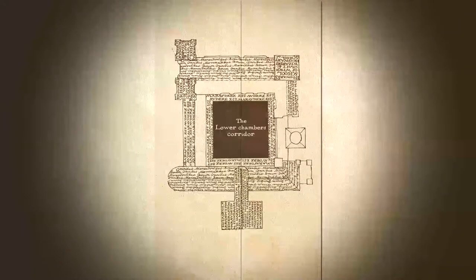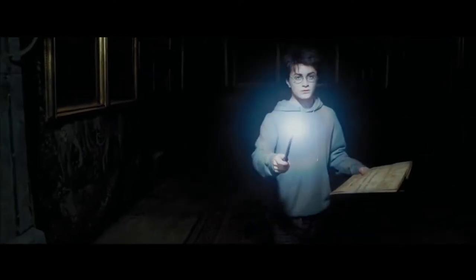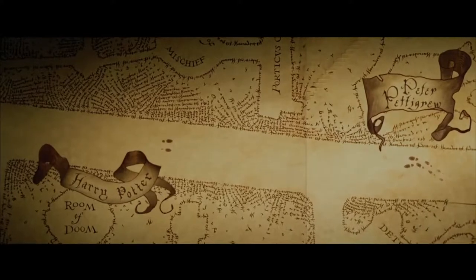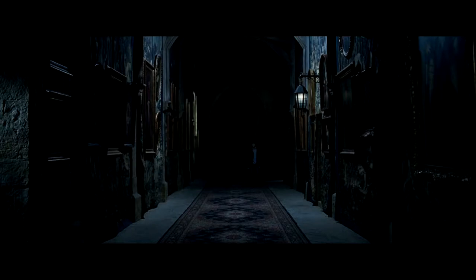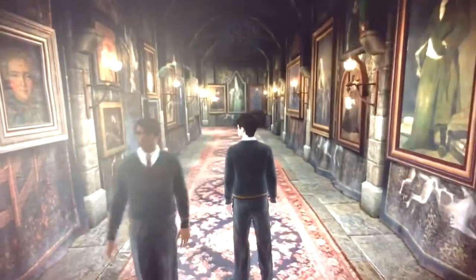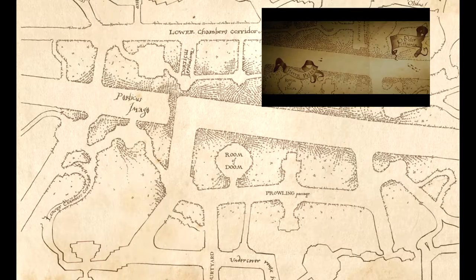The Tapestry Corridor, or the Lower Chambers Portrait Corridor as the map calls it, first made its debut in the third movie, Prisoner of Azkaban, where Harry was following Peter Pettigrew on the map before getting caught by Snape. Then we saw it again in Goblet of Fire, and you can explore it in the video game as well. Luckily, the original map replica does include this corridor, as you can see here. However, the surrounding structures don't make much sense, which is probably why the movie focused solely on the corridor.